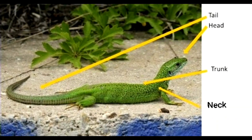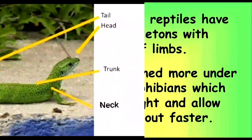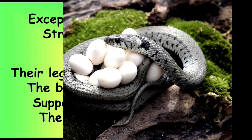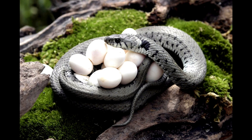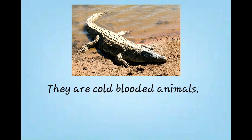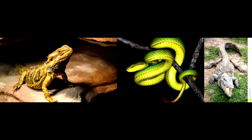Their body is divided into head, neck, trunk and tail. They have two pairs of limbs, except in snakes. They reproduce by laying eggs, so they are oviparous animals. They are cold-blooded animals. Some examples of Class Reptilia are lizard, snake, and crocodile.